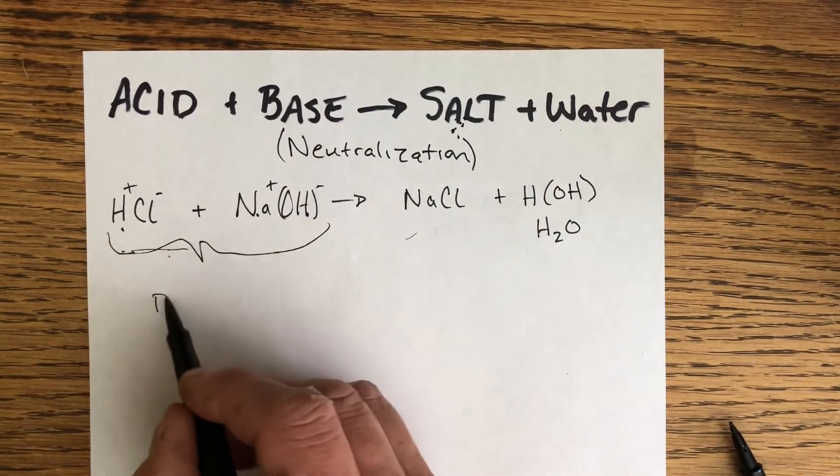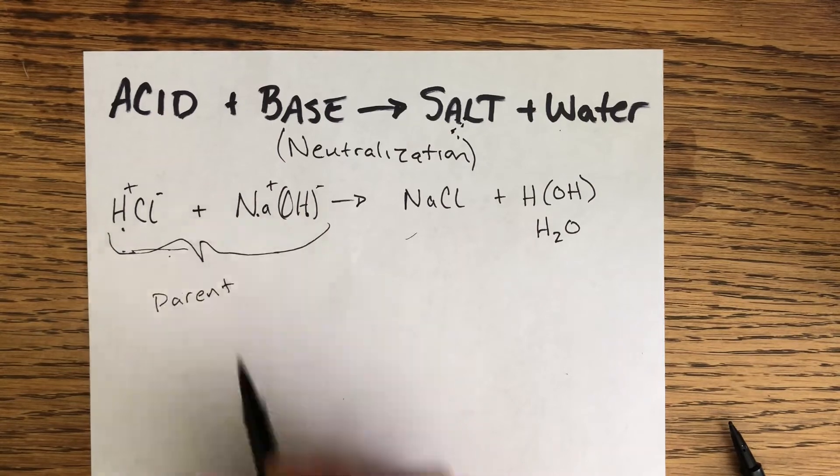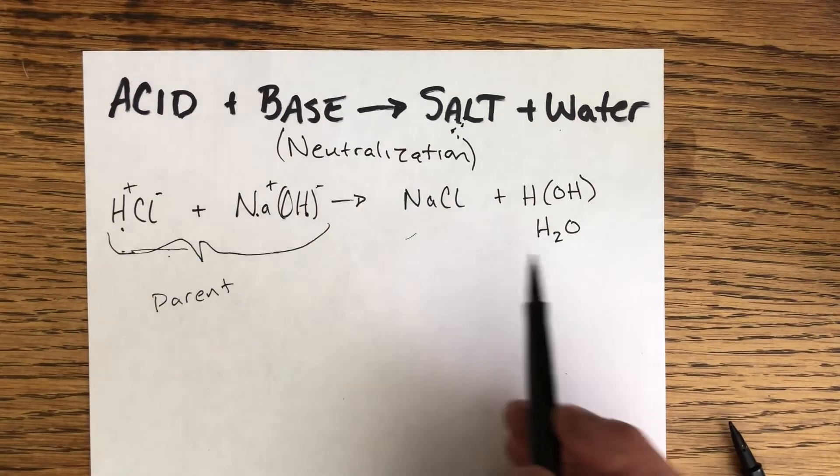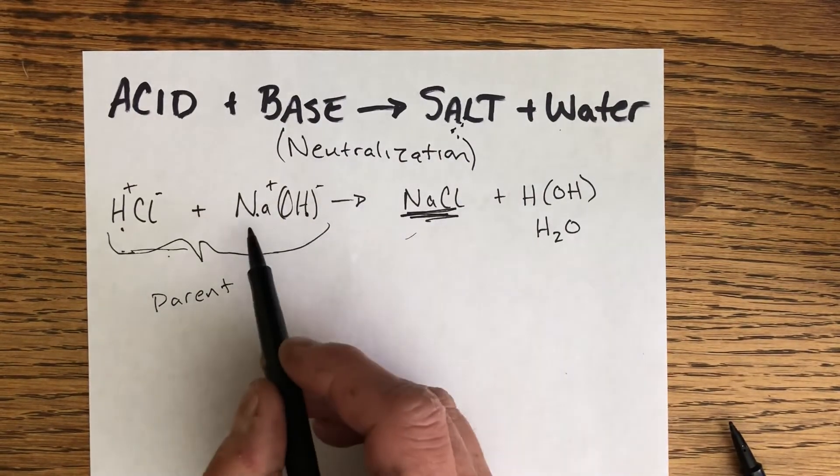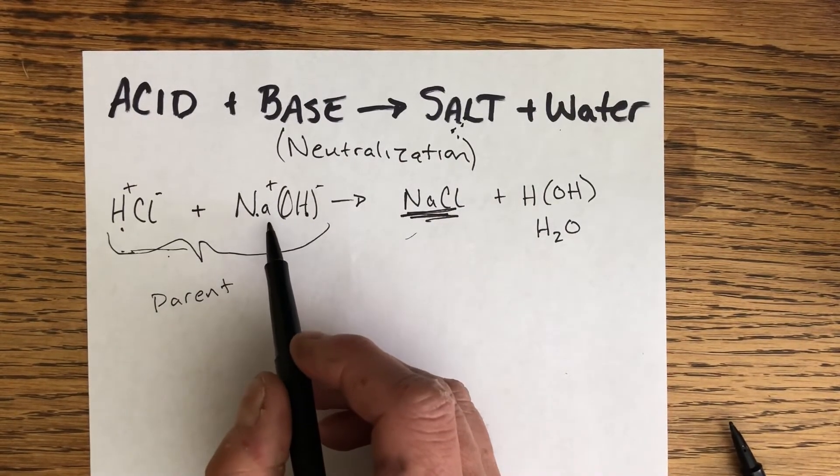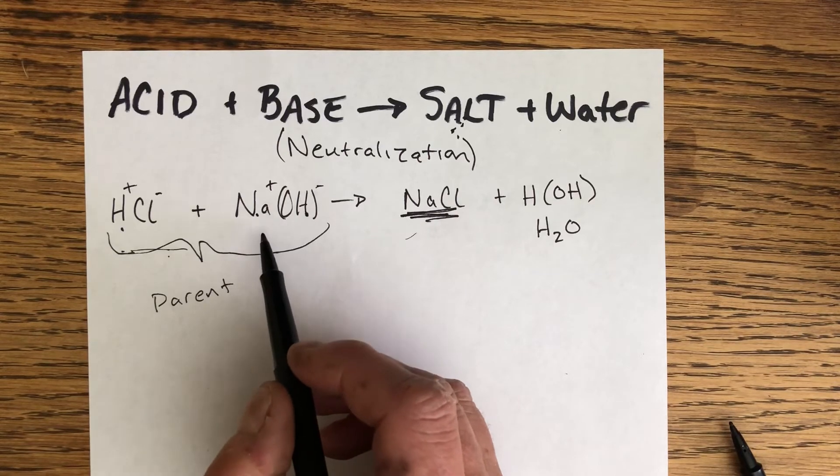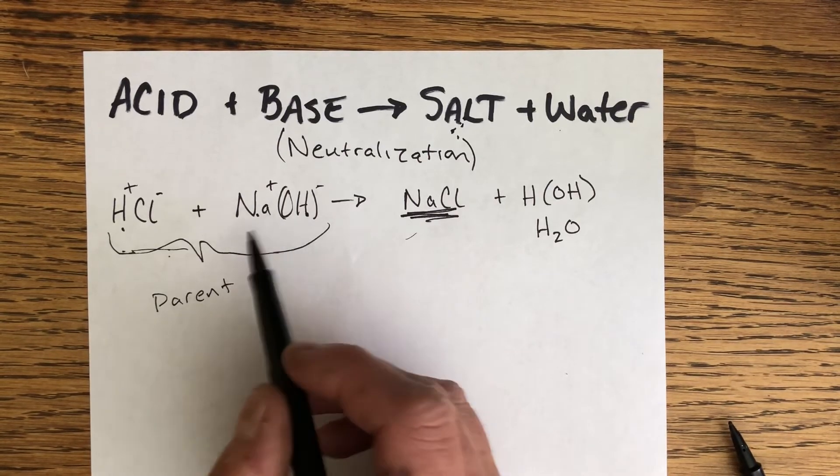These are known as the parent acid and base, and then these are the products. The type of salt that is produced is totally dependent on the type of base that's used here. You can picture that the salt is not just based on the base, it's also based on the acid.